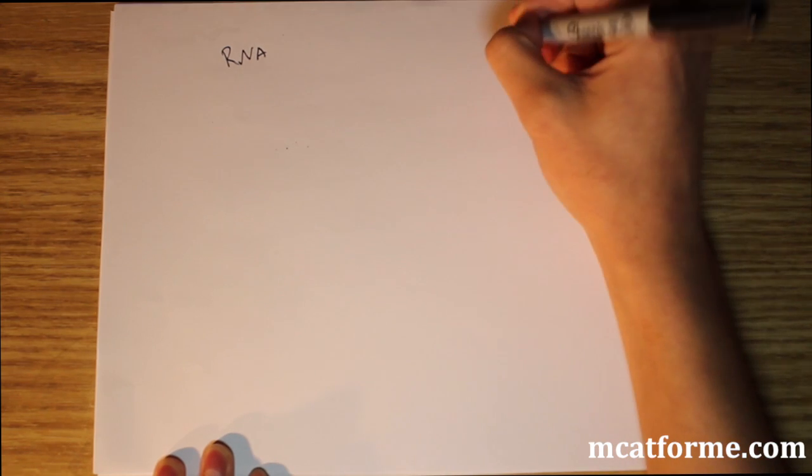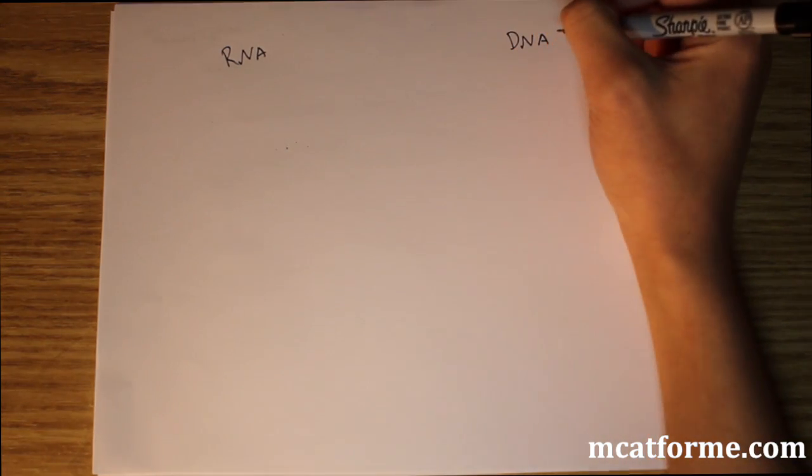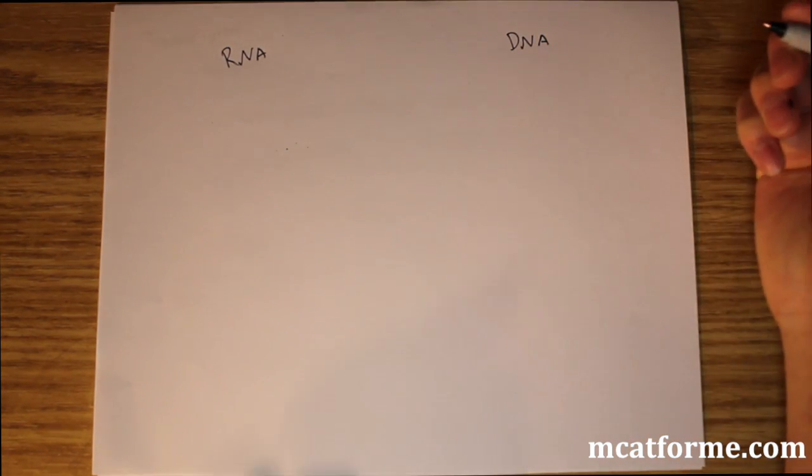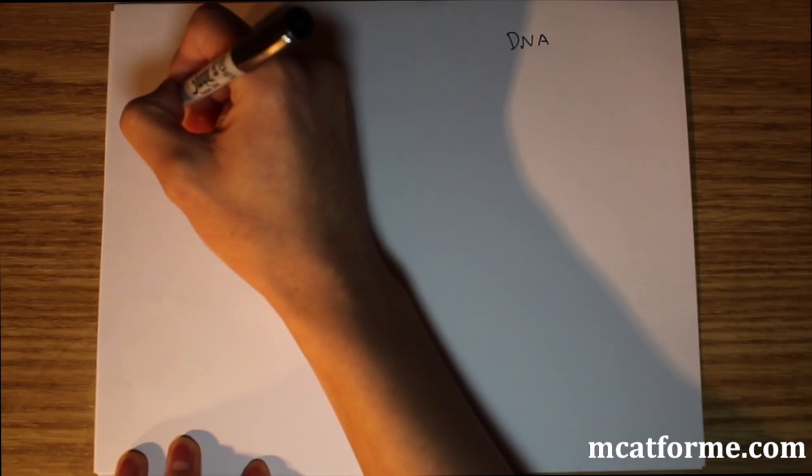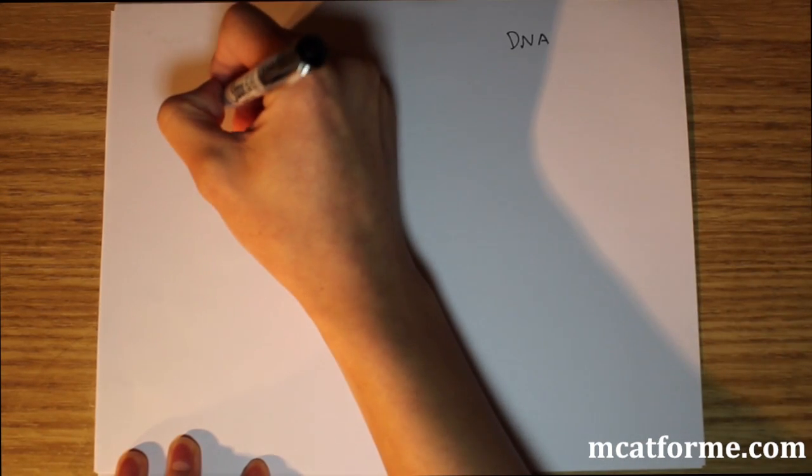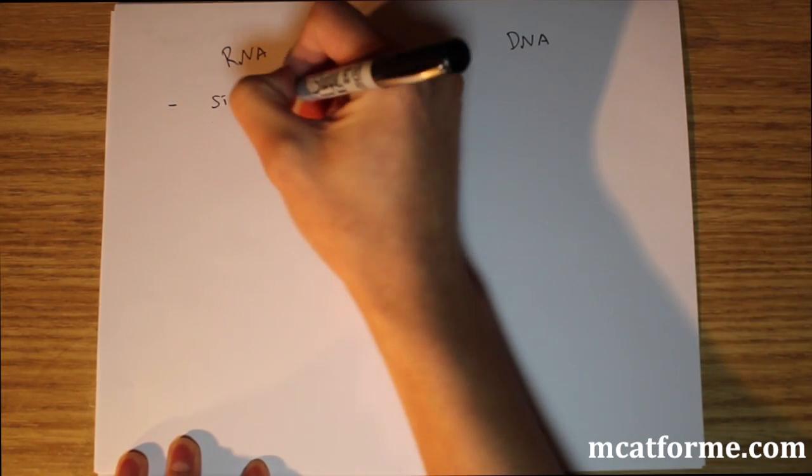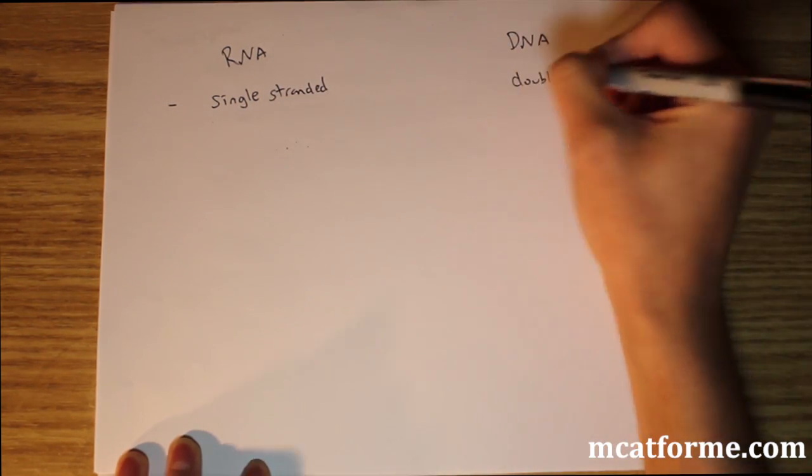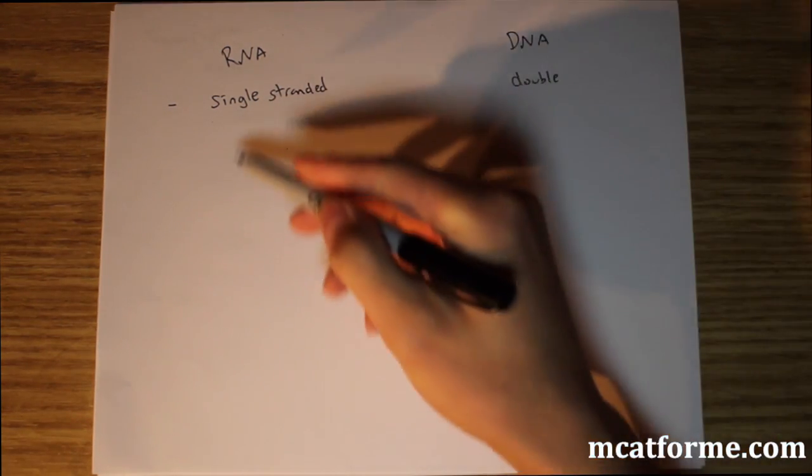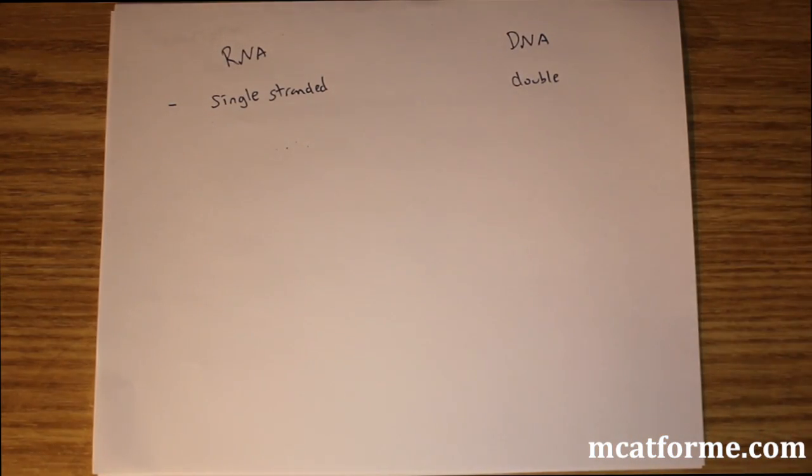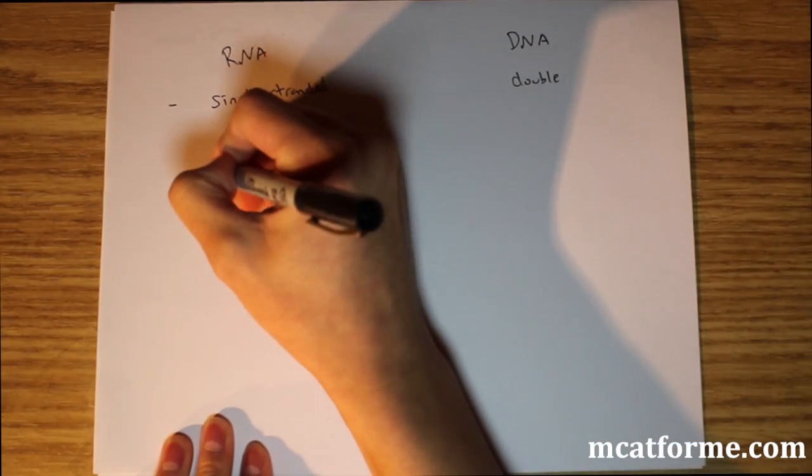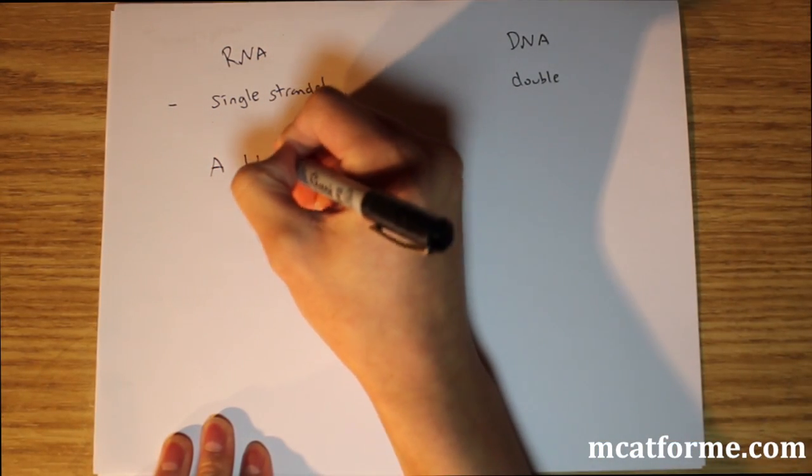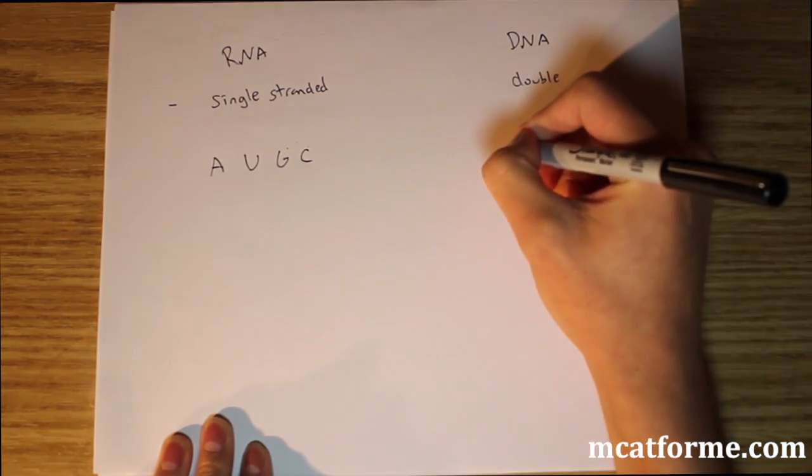So DNA versus RNA. If we have RNA on this side and we'll put DNA on this side, we'll go over some of the very key points that you'll need to know. So the first thing is that RNA is single stranded versus DNA is double stranded. So we have that double helix versus just a single strand of RNA. The nucleotides involved will be A, U, G, and C versus A, T, G, and C.